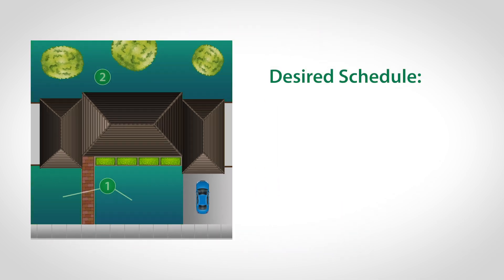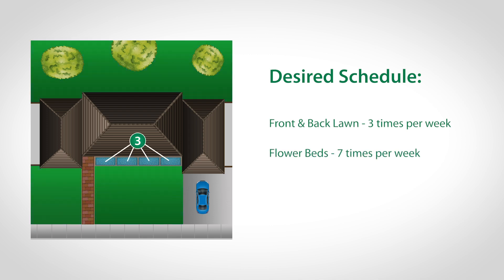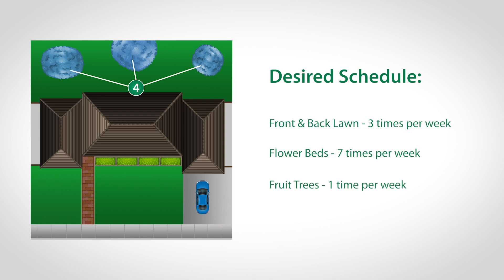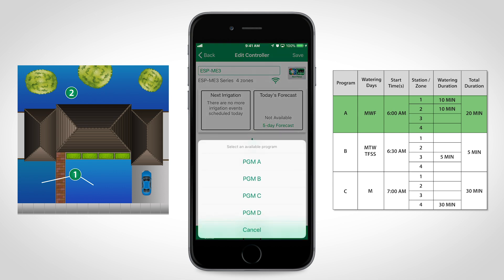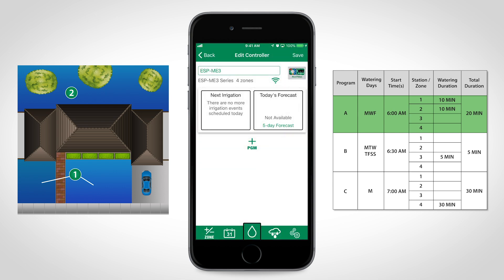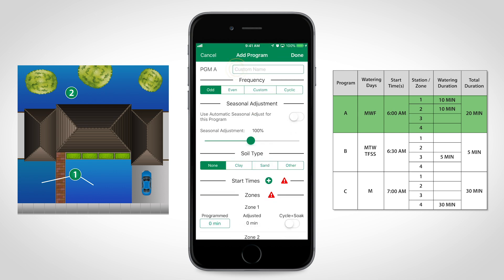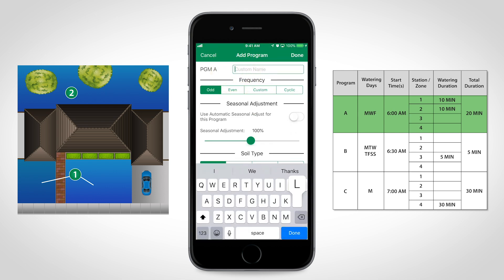We want to run the front lawn and back lawn zones three times per week, the flower beds seven times per week, and the fruit trees once per week. Since the two lawn zones both utilize spray heads and run on the same days, we can put both of those zones on the same program.